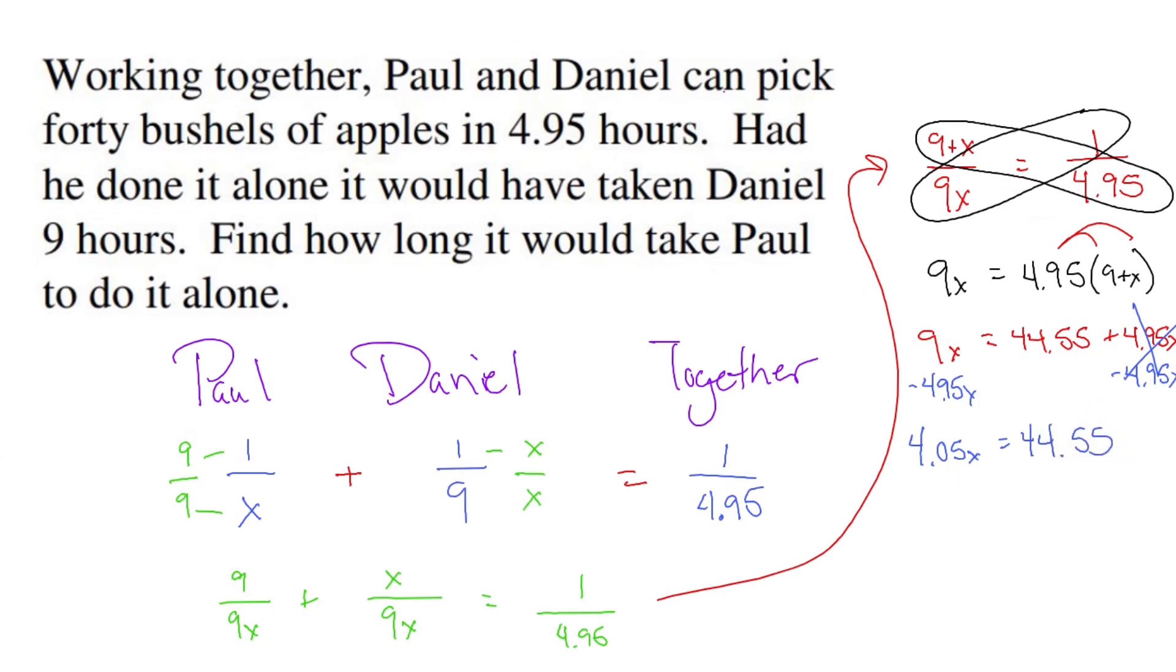x is still not alone by itself. It's being multiplied by 4.05, so let's divide both sides by 4.05. You're going to end up getting a terrible number: 10.98765, I'm not joking, 4, 3, 2, 1, blah blah blah.